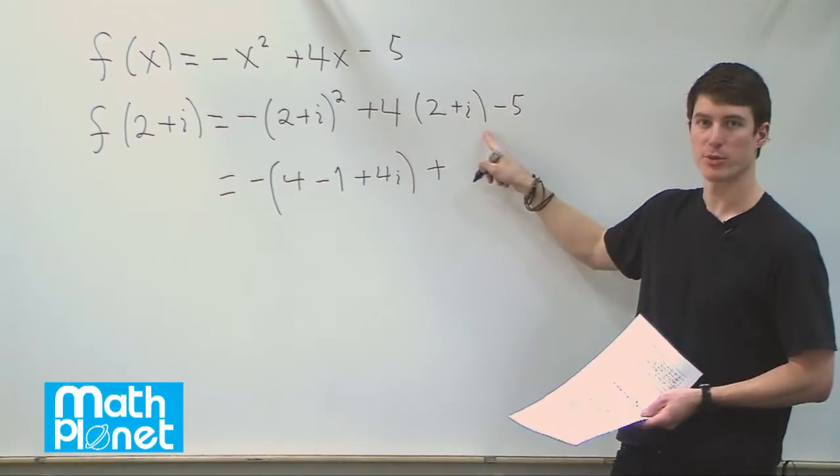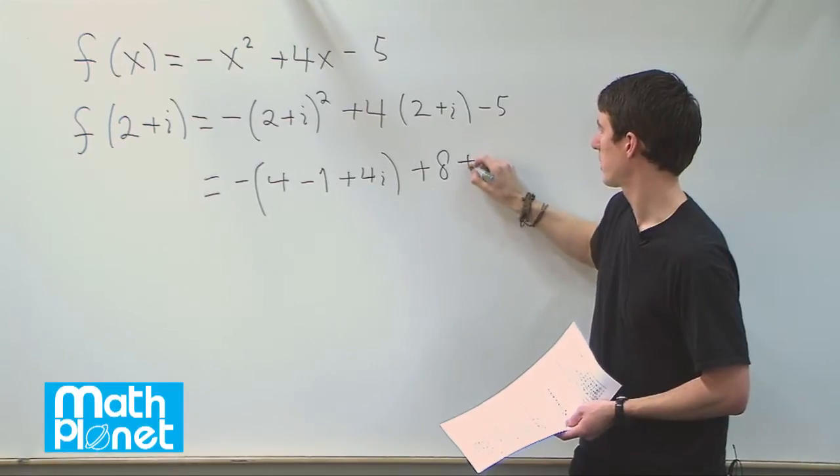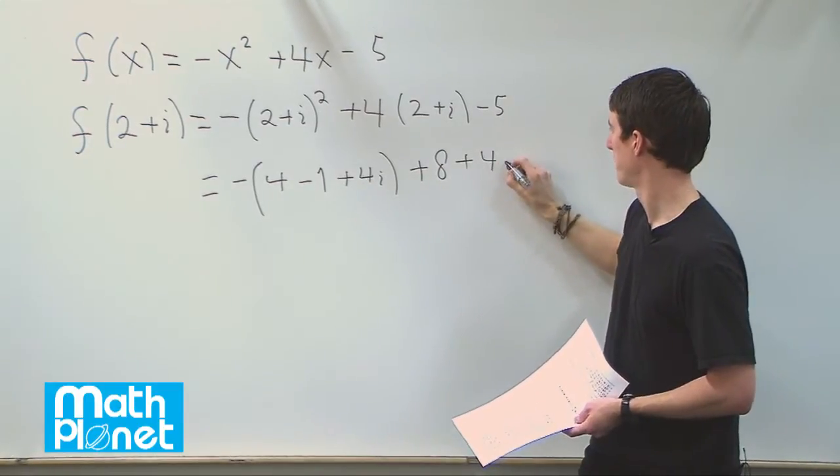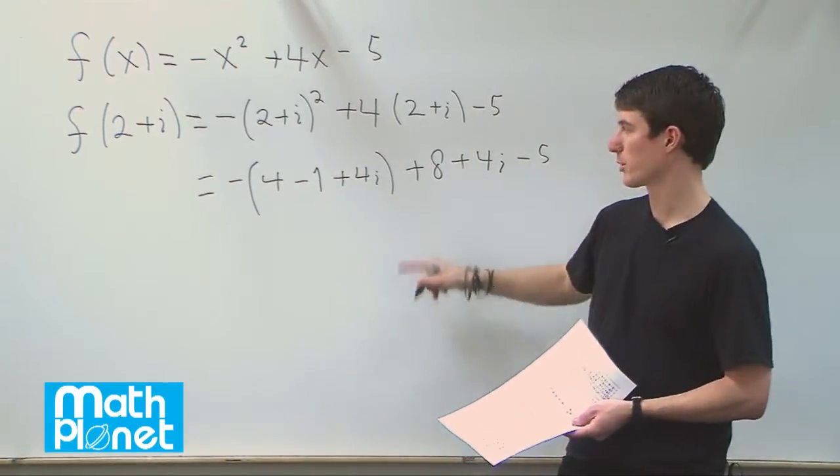Plus, now we can just expand this through, this 4, so 4 times 2 is 8, plus 4 times i is 4i. And we still have our minus 5. Alright, now we can distribute this negative through and see what we get.